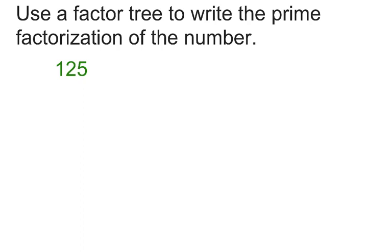So our first step in writing a factor tree is to look at two numbers that can be multiplied together to get 125.